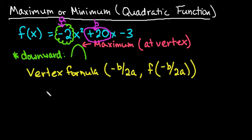So we're going to go through and find the x-coordinate first. We would do negative 20 divided by 2 times our a term, which is negative 2. So we really have negative 20 divided by negative 4, which would give us positive 5.